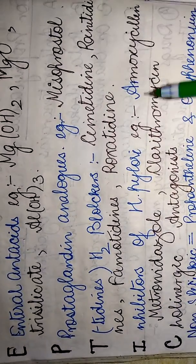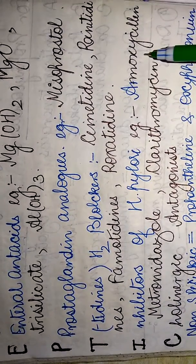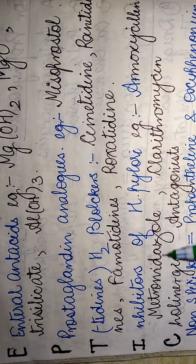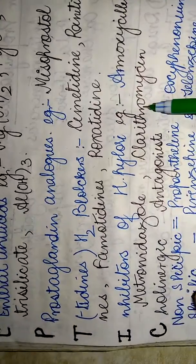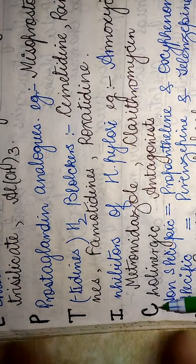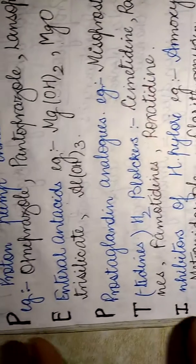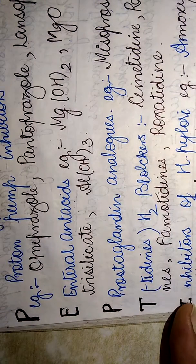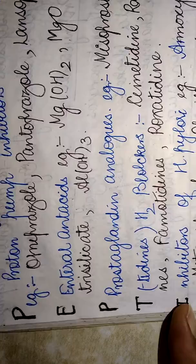I, the I stands for inhibitors of Helicobacter pylori infections. The drugs used in this category include examples like amoxicillin, metronidazole, and clarithromycin.